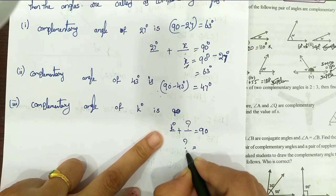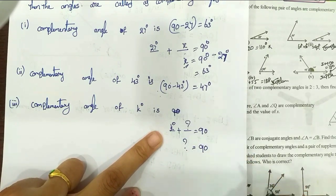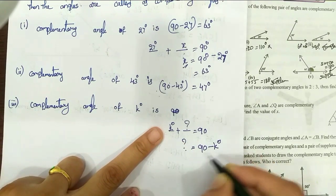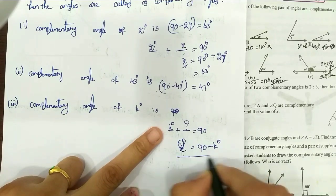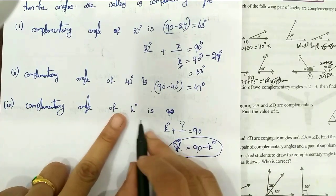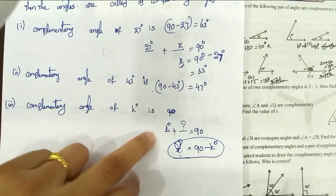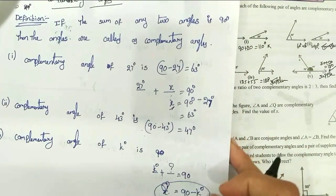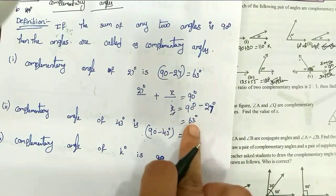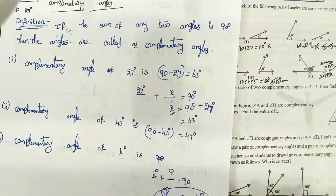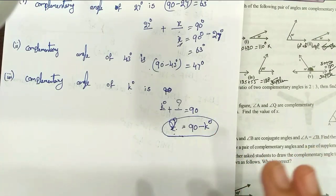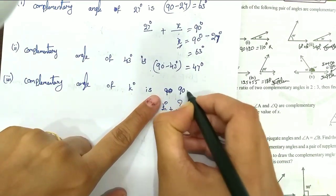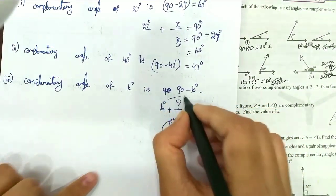I will find this number. I will transfer — transpose — this number, so it becomes minus. The second value is 90 minus the given angle. First angle: k. Second angle: 90 minus k. The first problem gives 63; so we subtract: 90 minus k.